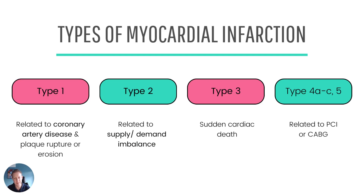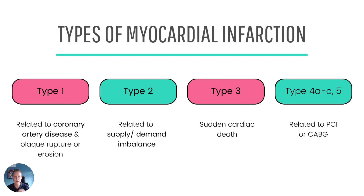The next question is what kind of myocardial infarction we have, because only a type 1 MI will benefit from the usual treatments with antiplatelets, statins, and coronary revascularisation. Type 1 is related to coronary artery disease with plaque rupture, erosion, or dissection. Type 2 is very common in emergency medicine — it's related to an imbalance of oxygen supply and demand, such as in sepsis, massive GI bleed, or tachyarrhythmia with ischaemia. The approach to type 2 is to address the underlying cause rather than treating the MI per se. Type 3 MI is sudden cardiac death, and types 4 and 5 are related to PCI or CABG.